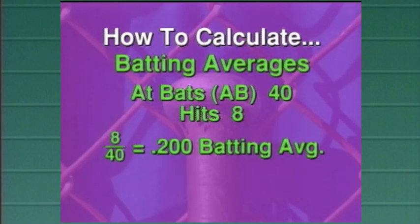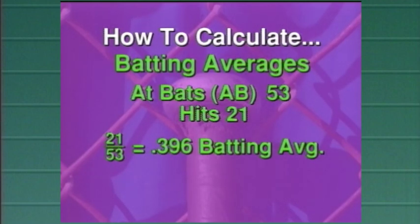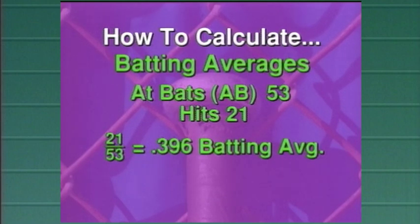Let's look at another one. If you had 53 at bats and 21 hits, you would divide those two numbers, and that would give you the .396 batting average.